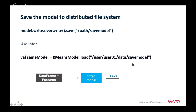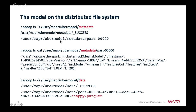Next we save the model to the distributed file system so we can use it later with the streaming data. On the filesystem the model consists of metadata in JSON format and data in Parquet format.